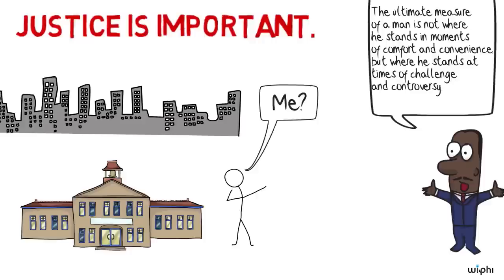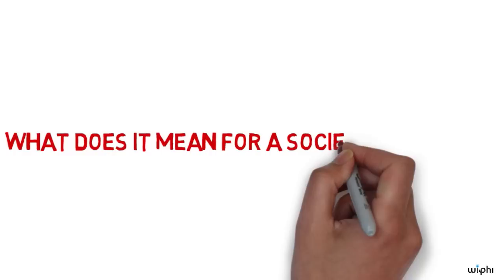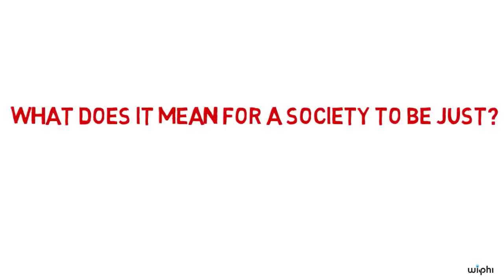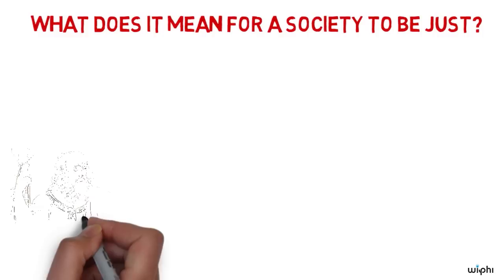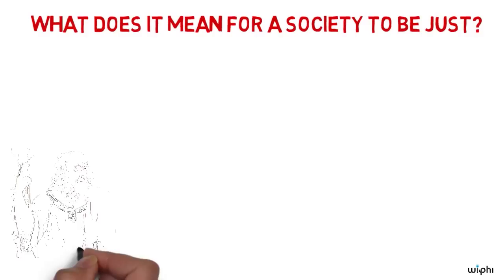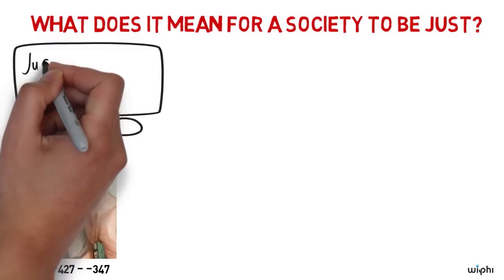Before we discuss possible ways of creating a just society, we should first have an idea about what it means for a society to be just. Discussions about the concept of justice go back a long time. The ancient Greek philosopher Plato, for example, described justice as an internal harmony.